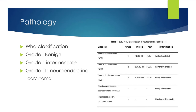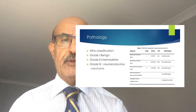The same grading applies to the Ki67 proliferative index, which the pathologist measures under the microscope. It is a protein produced by cells that reflects the speed of growth and degree of malignancy: less than 2% is grade 1; 3–20% is intermediate; more than 20% is grade 3. The pathologist also assesses the degree of differentiation. Based on all these parameters you can determine prognosis and treatment. The same system applies to neuroendocrine tumors of the gastrointestinal tract, most commonly arising in the terminal ileum and appendix.